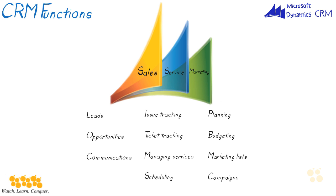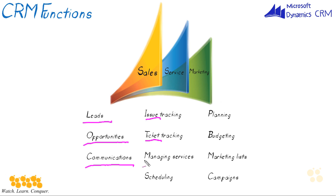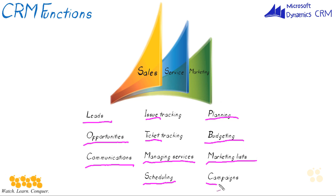Generally speaking, Microsoft Dynamics CRM is broken down into three functional categories: sales, service, and marketing. Sales generates leads for prospecting and qualifying, manages opportunities, and tracks communications. Service tracks issues and customer tickets, and manages and schedules services and resources. Marketing handles campaign planning, budgeting, generates marketing lists, and manages marketing campaigns. Throughout this course we're going to be working in these three general functional areas.